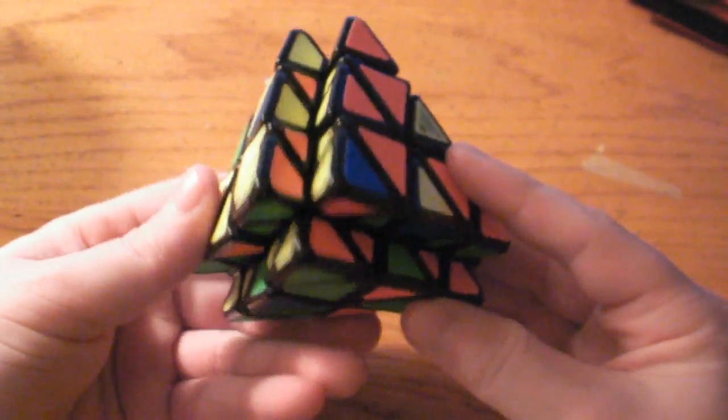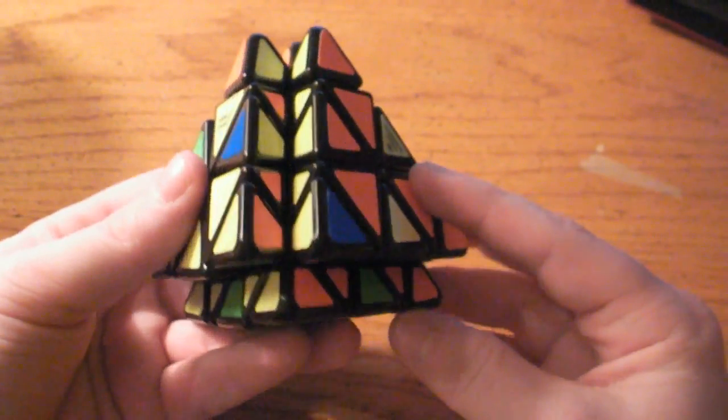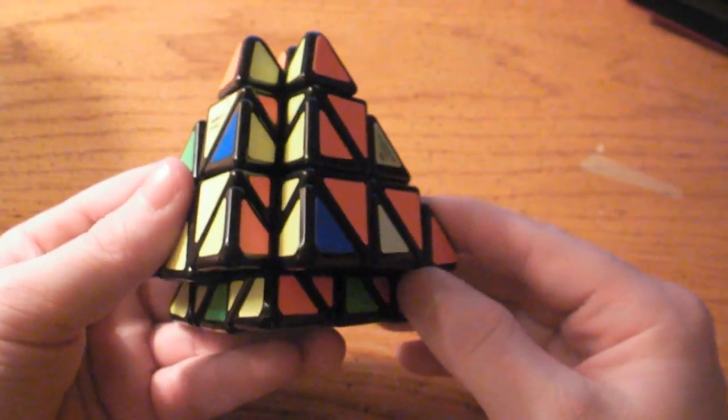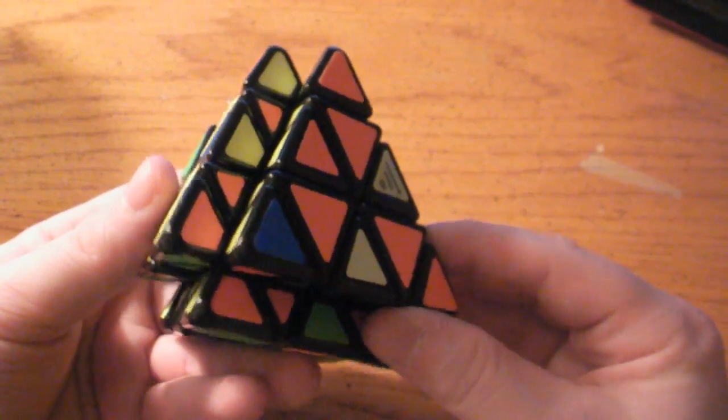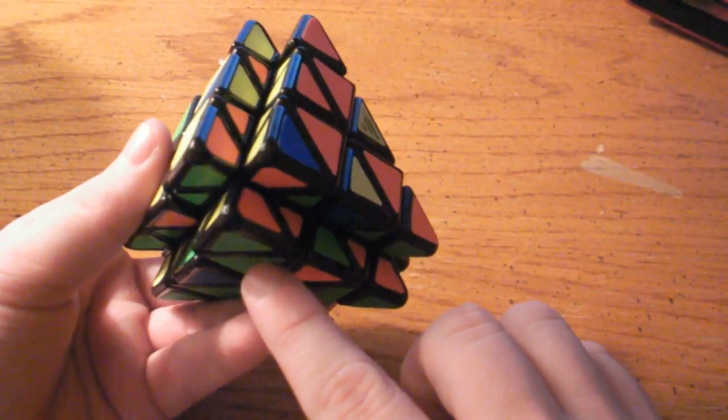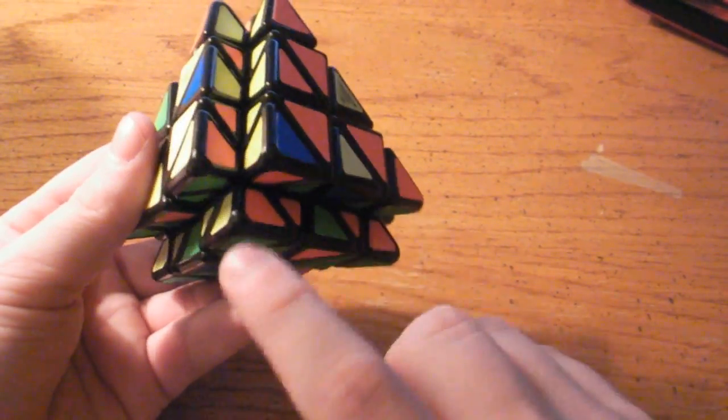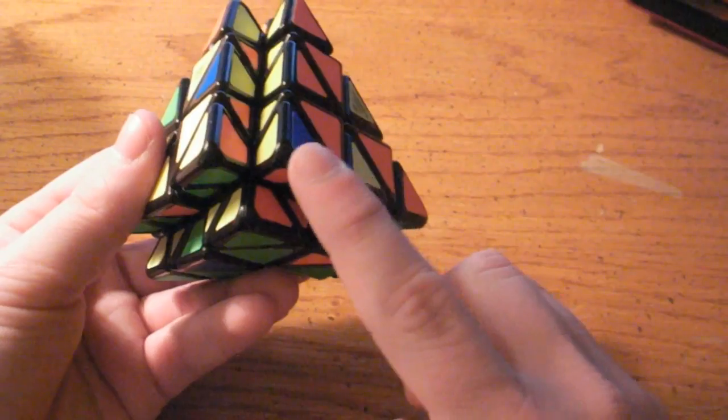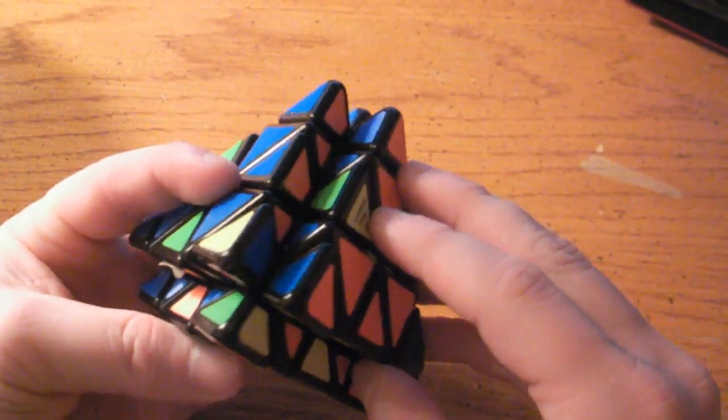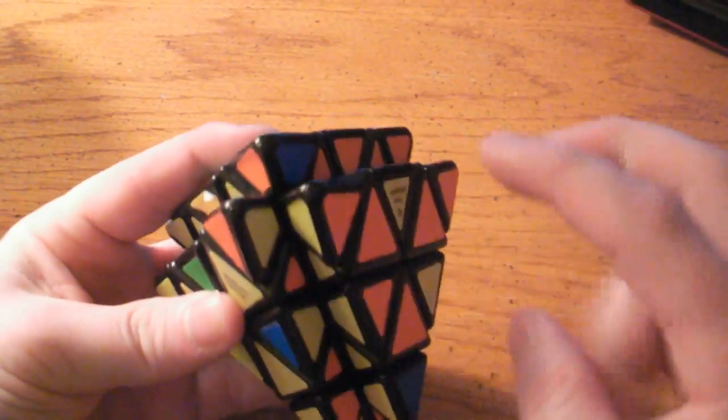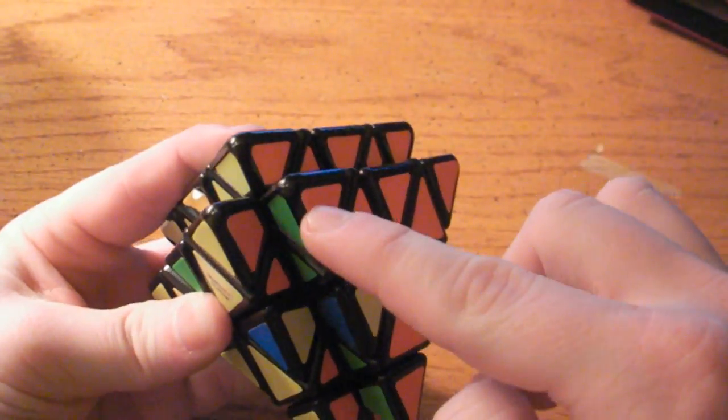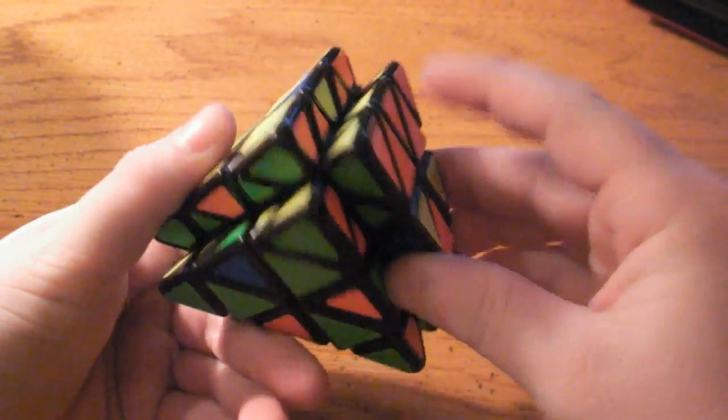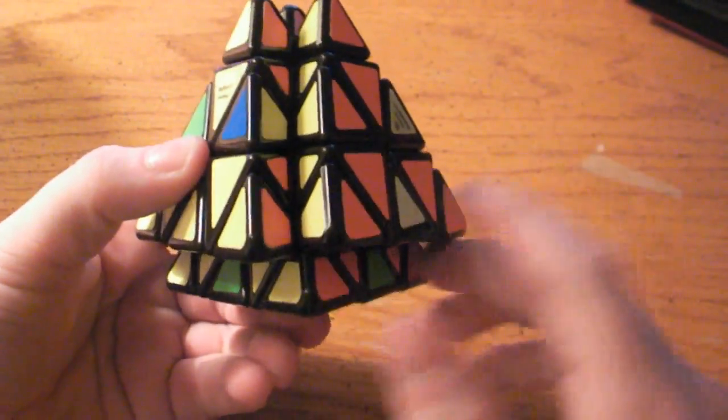And again, similar to the first step, the last step is very simple. Sometimes, your tips will already be solved. Generally not. But sometimes you can get lucky. So, this tip right here has green, yellow, orange. So, since two of these are already there, I just need to find the last one and put it here. So the last one is this piece right here. So I'm just going to bring the tip up, put the green, yellow, orange tip here, and bring it back down. And now this tip is solved.